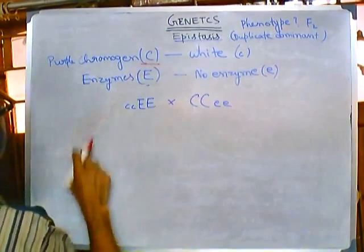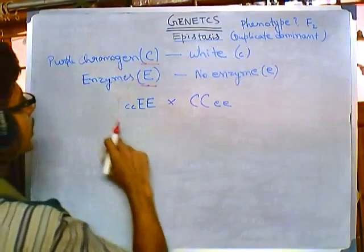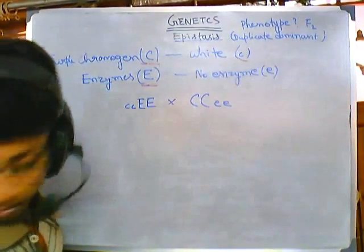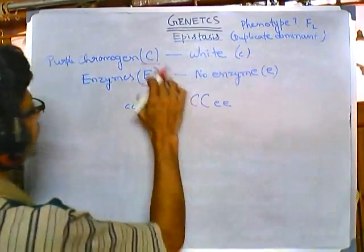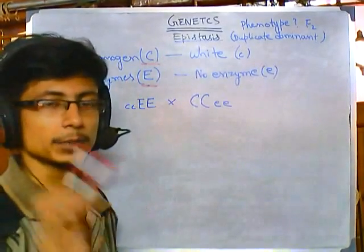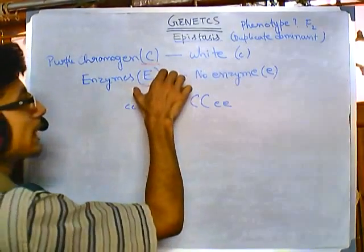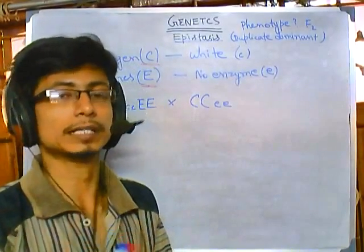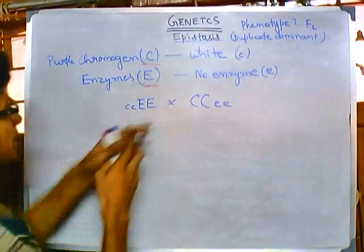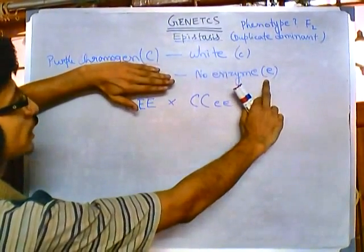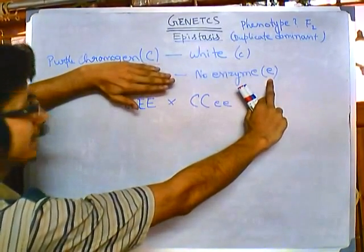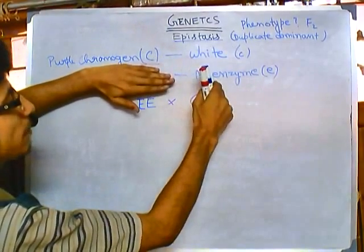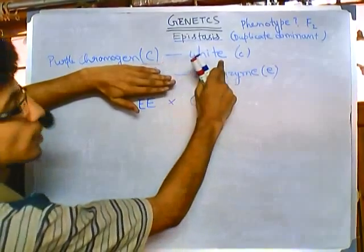We need both cap C and cap E to get the purple color. We also need chromogen as well as the enzyme — the enzyme plays the tricky role in this question. Without the presence of the enzyme, even if the purple chromogen is present there will be no coloration. If the genotypic expression of small e is there, there is no cap E, no enzyme — so even if cap C is expressing, the flower will be white.